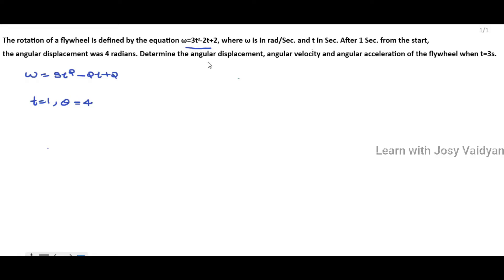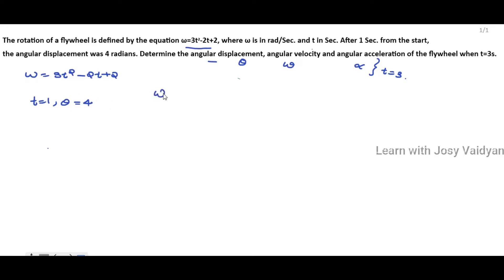We have the equation for omega. Now we are going to relate omega to theta and alpha. Omega is the angular velocity, which equals d-theta divided by dt. That is, omega equals d-theta over dt.